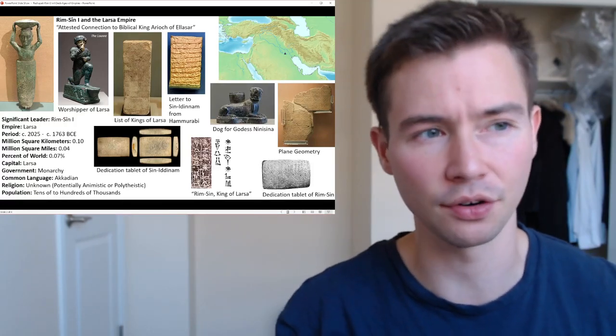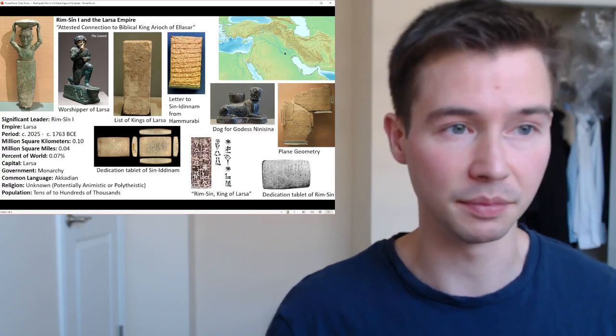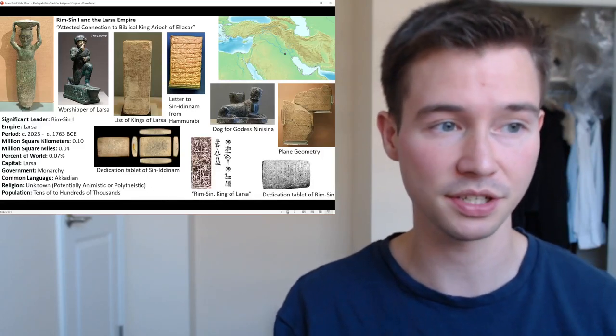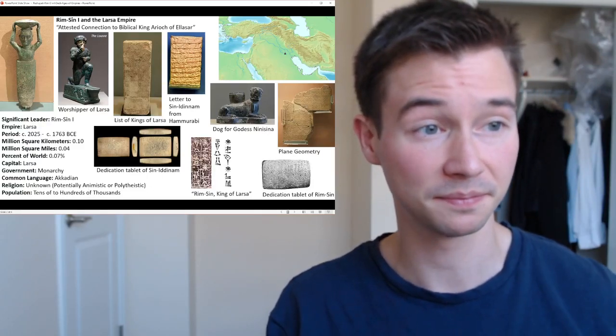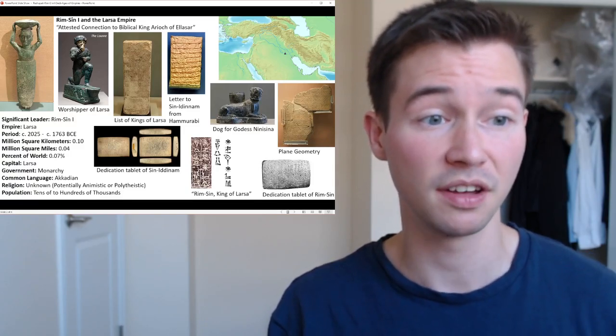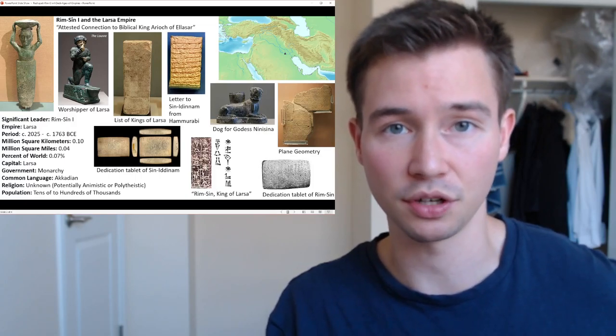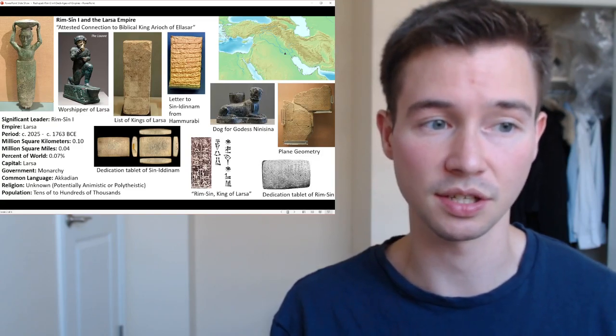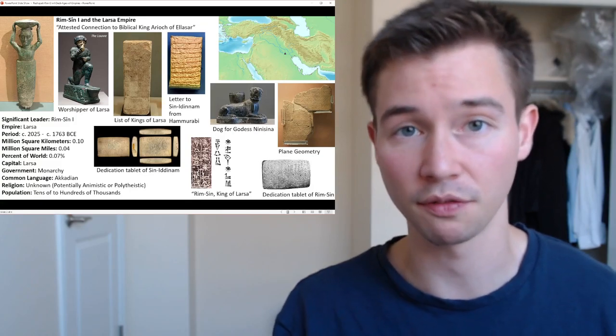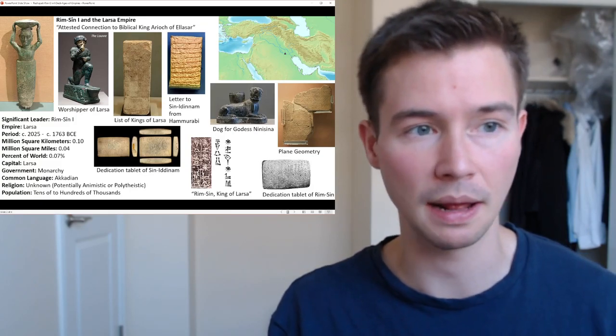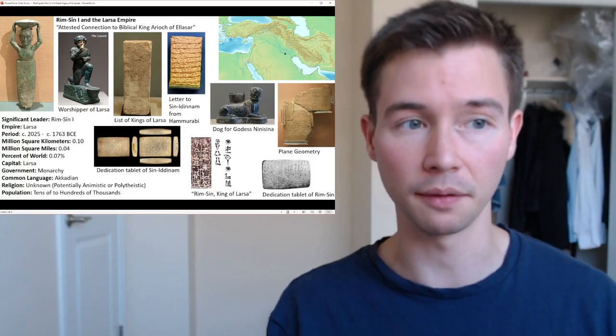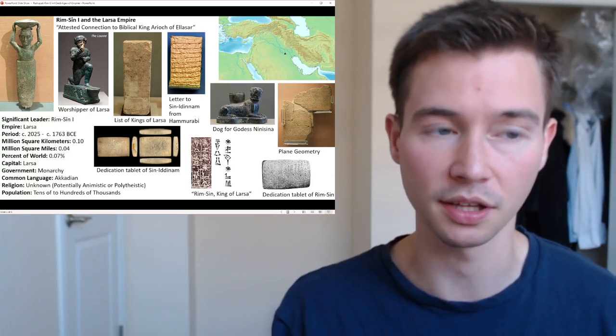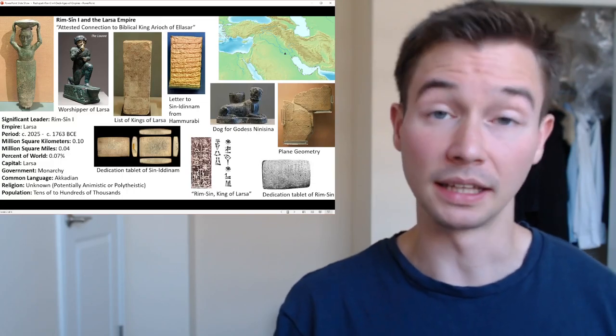So I guess now we can proceed to talking to the slide. On the top left, that is an image of Rim-Sin I. To the right, we have the worshiper of Larsa, which is a famous structure, actually, from the later times, somebody, a worshiper of Larsa, worshiping for, I believe, a Babylonian king, and it's in the Louvre. It's one of the oldest statues we have, at least in the Louvre.